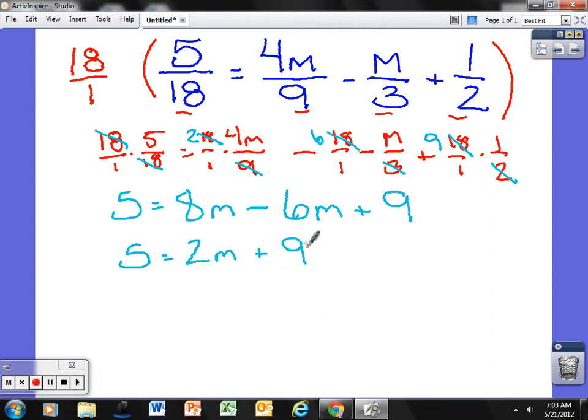Okay, I want to get rid of this 9. To get rid of it I need to do the opposite so I'll subtract 9 from both sides. That cancels out. Subtract 9 from this side.